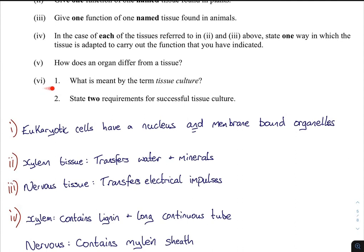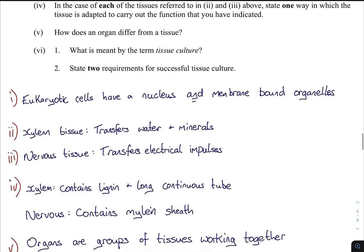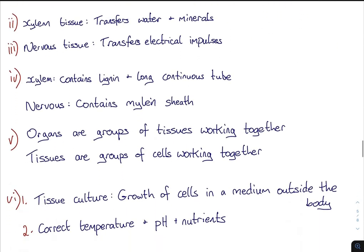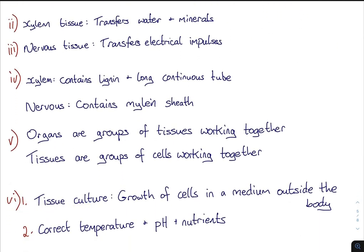Tissue culture — we've seen that already — and state two requirements for it, which is new. Tissue culture is the growth of cells in a medium outside the body, such as in a petri dish. What do we need for it? You need the correct temperature, the correct pH, and appropriate nutrients. There are probably more requirements you could mention, but those three are key.